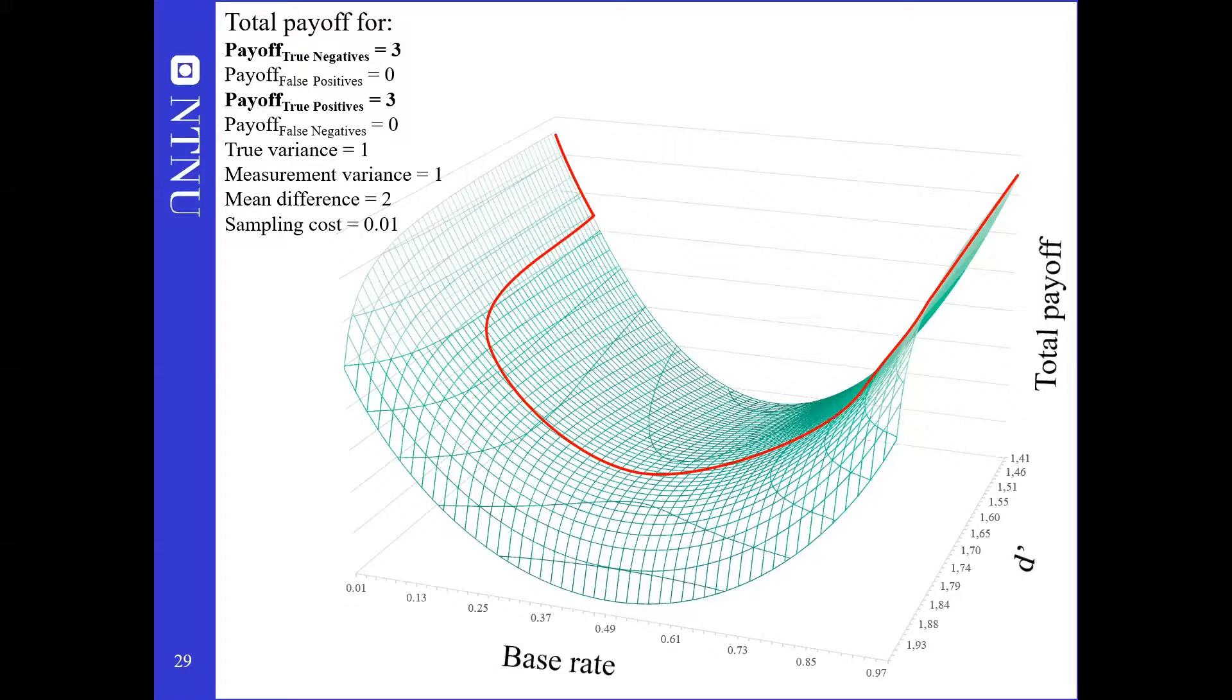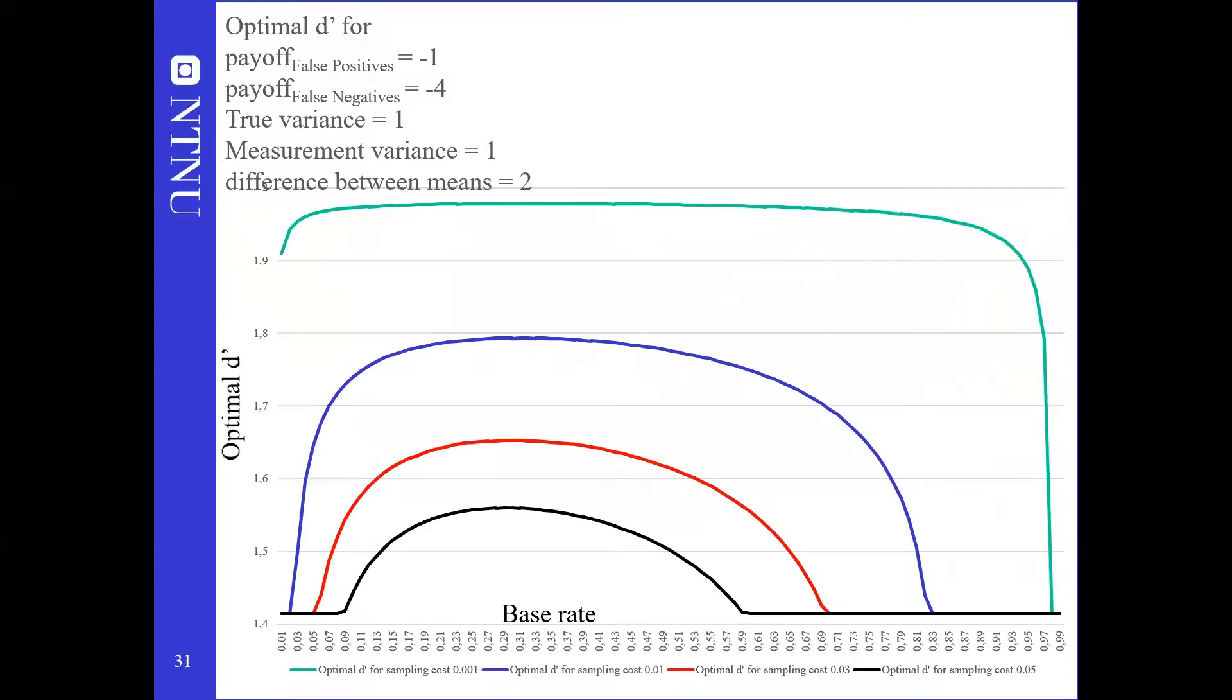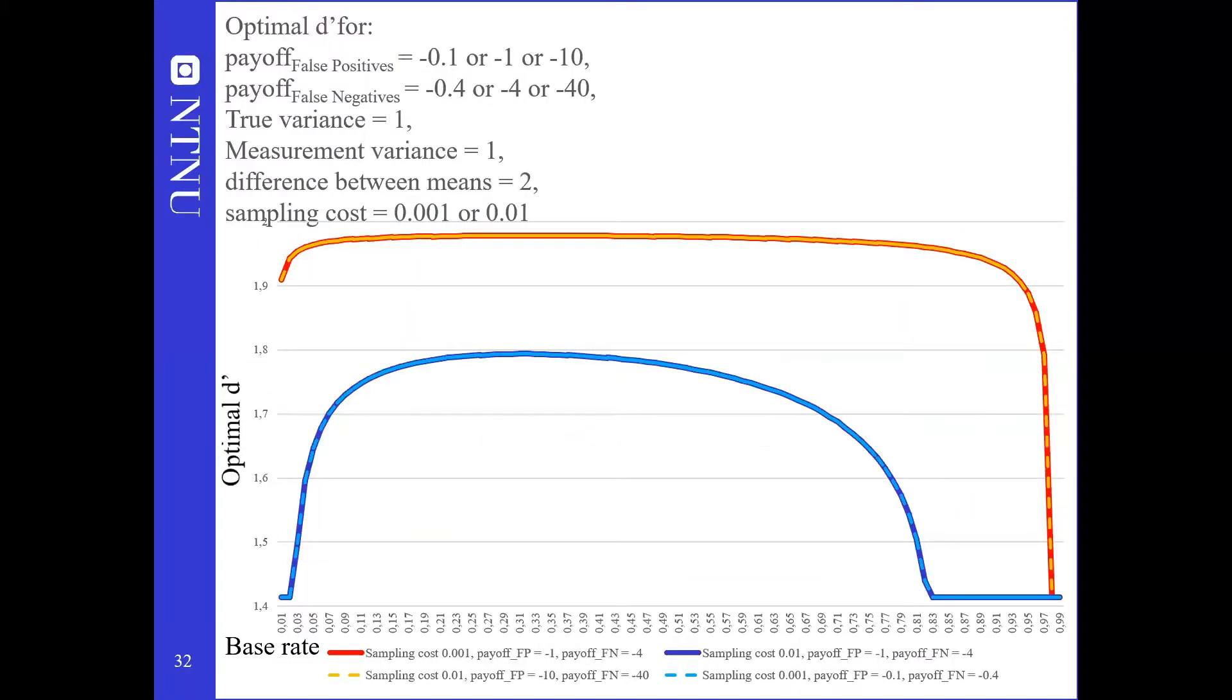Next we're going to be looking at the optimal d' for scenarios where payoff is not symmetrical. This is what that graph looks like. Notice the transformation of the curve. Here we see how false negatives being four times as important as a false positive skews sampling toward lower base rates. Otherwise the pattern is much the same as before. Finally as an added check we have inserted functionally similar values underlining how the payoff ratio rather than the absolute numbers is what is affecting these graphs. The stippled lines have different payoff ratios than the lines they go through but with the same one in four ratio.